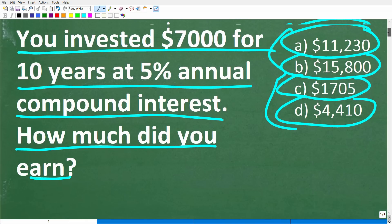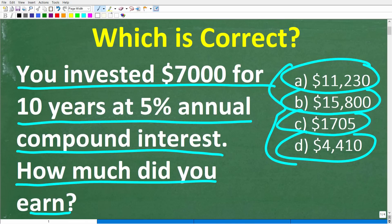Let's go ahead and take a look at this problem one more time. We worked really hard and we saved up $7,000. Now we're ready to invest and make money on our money. We're going to invest this $7,000 in something — maybe a vehicle at the bank, a certificate of deposit — something that gives us a compound interest return. So $7,000 is invested for 10 years at 5% annual compound interest.